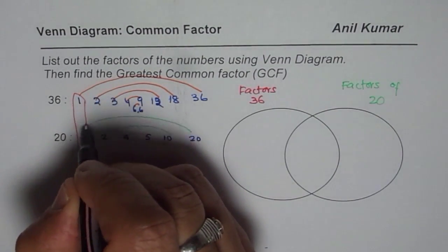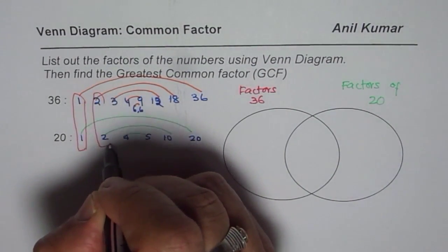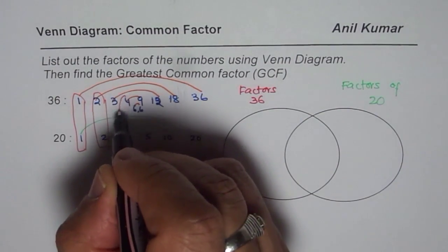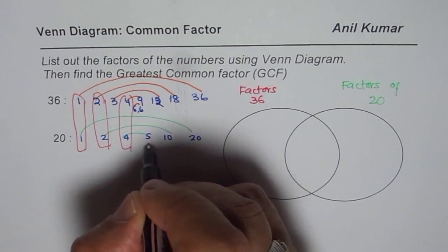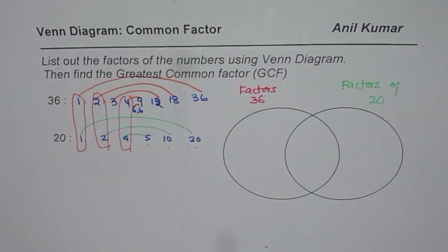1 is always common, right? So 1. And then we have 2 as common. How about 4? 4 is also common. 5 is not common, 10 is not common, and 20 is not common.